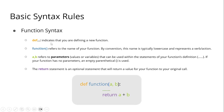We go to our basic syntax rules for functions. We call our function using 'def', which indicates that you are defining a new function — def means defining. 'Function' refers to the name of your function. By convention, this name is typically lowercase and represents a verb or action, for example 'def add'. If your function has no parameters, an empty parenthetical is used.